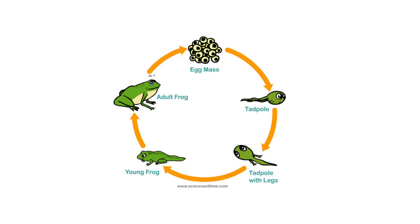The frog is a living thing. The frog life cycle begins with eggs. These are eggs. Then the eggs grow and become a tadpole. This is called a tadpole. Then the tadpole grows and becomes a tadpole with legs.